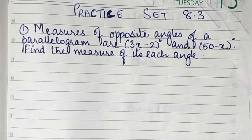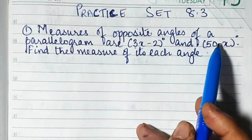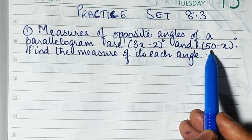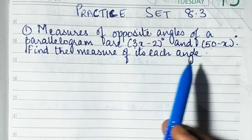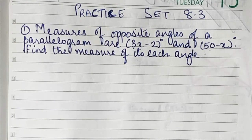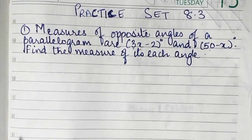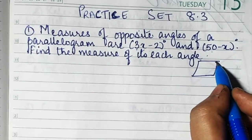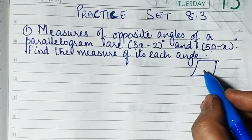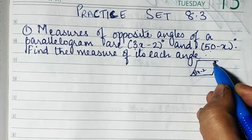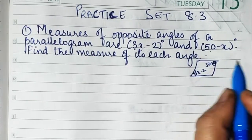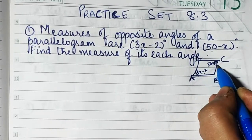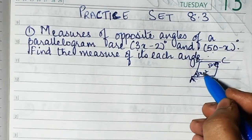We start with practice set 8.3. The first sum: measures of opposite angles of a parallelogram are 3x minus 2 degrees and 50 minus x degrees. Find the measure of each angle. Remember the properties of a parallelogram — opposite angles are equal. Draw a rough figure and label the vertices A, B, C, D. The angles 3x minus 2 and 50 minus x are opposite angles.